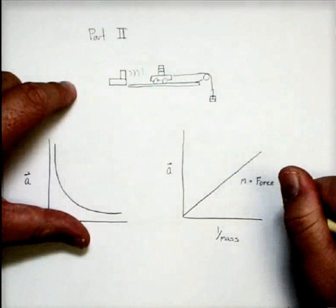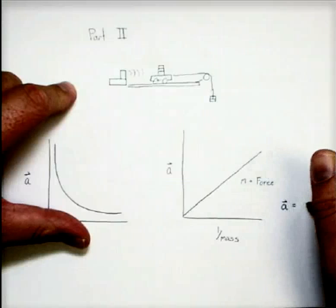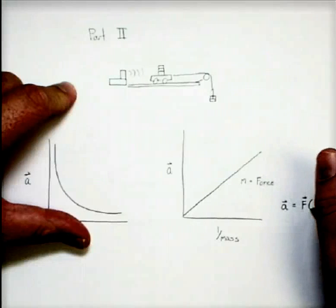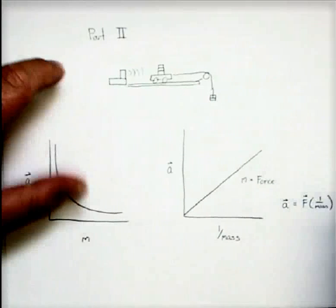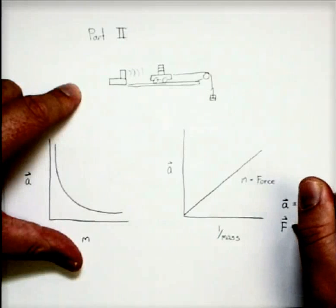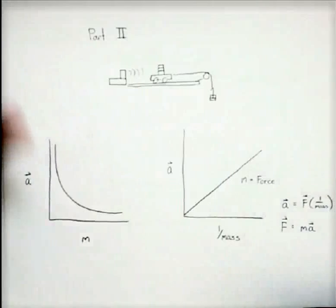If we were to write this out as an equation, acceleration equals the slope force times 1 over mass. We get the exact same result that we did last time. Again, rearranging our equations, we find that force is equal to mass times acceleration.